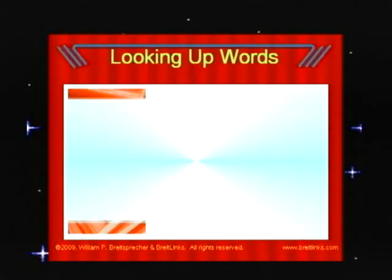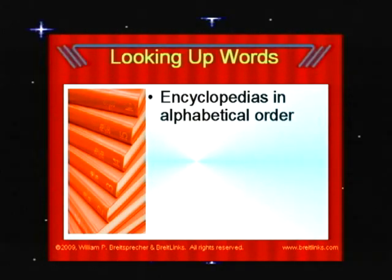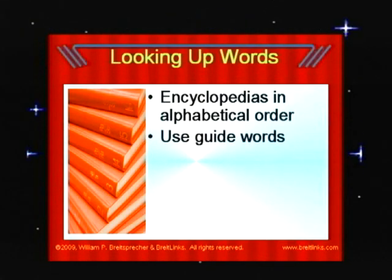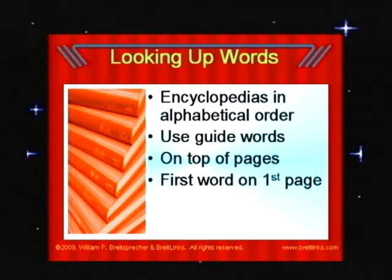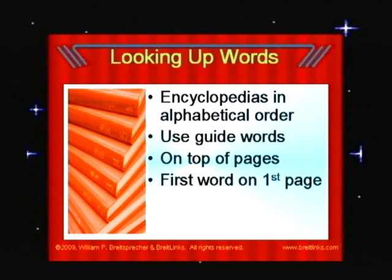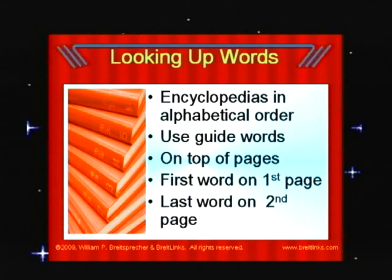Looking up words in an encyclopedia is easy because encyclopedias are organized in alphabetical order. They use guide words at the top of the page. The first guide word is the first word that appears on the first page. The second guide word is the last word that is covered on the second page.